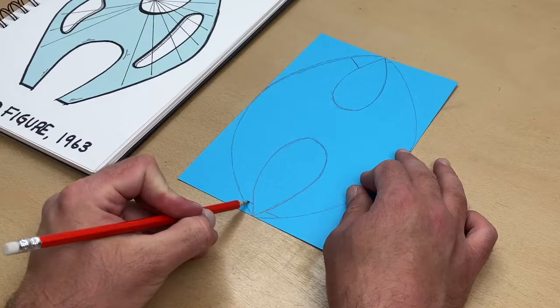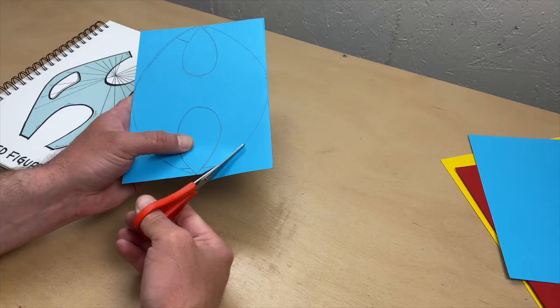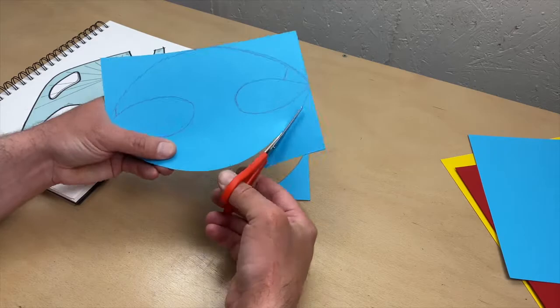Make one wing slightly smaller and chop off the tips. Then just cut it out.